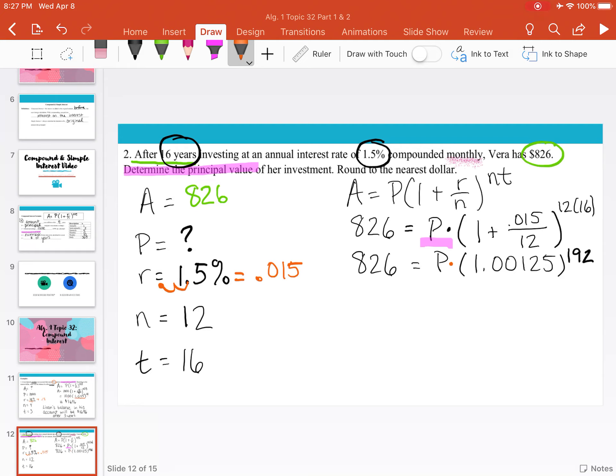The inverse of multiplication is division. Could we simplify this 1.00125 to the 192nd power? Yes. Would we end up getting decimals and numbers? Also yes. So one way that we can make this cleaner is just divide by 1.00125 to the 192nd power. And we'll do what we do on one side, we have to do on the other side. So the right-hand side cancels, and all we're left with is our variable P.